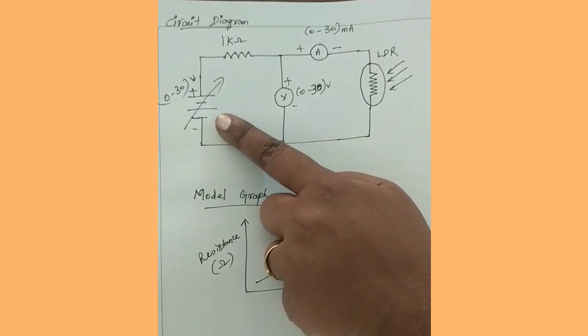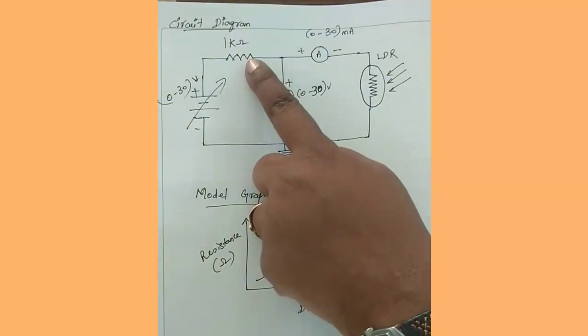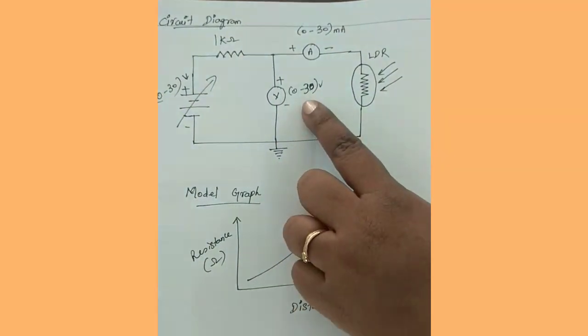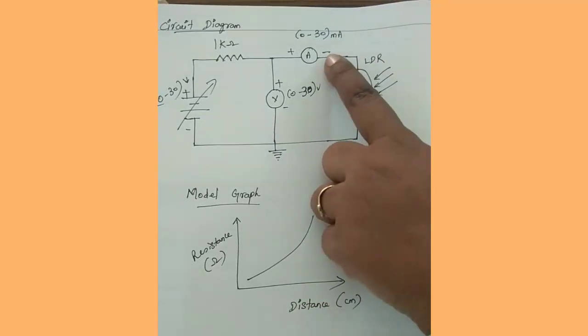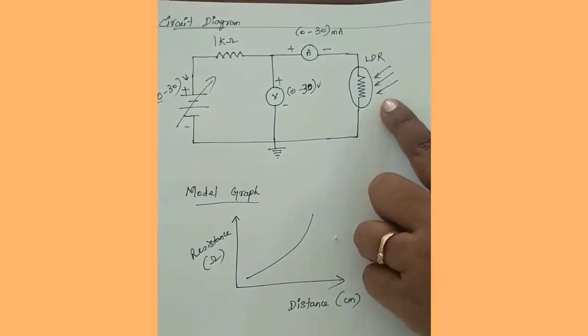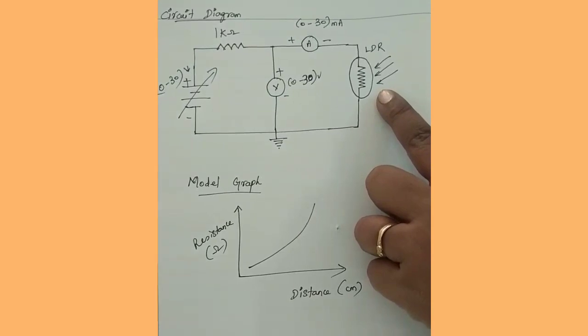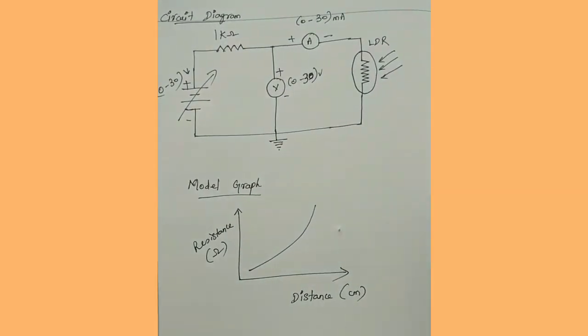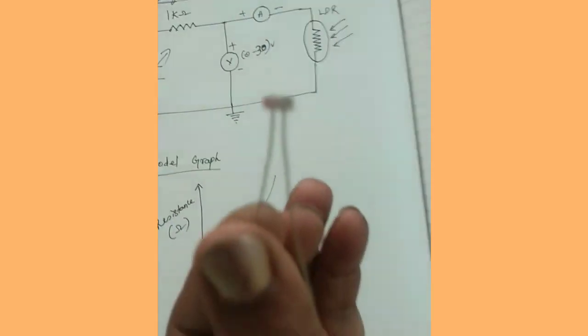You have an RPSU, one 1 kilo ohm resistor, a voltmeter, an ammeter, and an LDR. LDR is a light dependent resistor. This is the LDR.